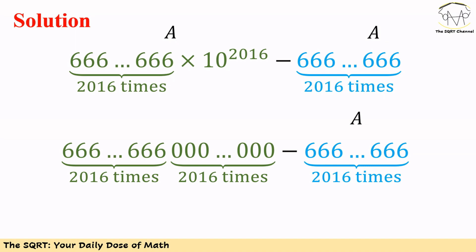Remember, 10^2016 has a 1 followed by 2016 zeros. Now we want to multiply A by this number, so we are going to end up with 2016 sixes followed by 2016 zeros. Then for the rest, we just use the number A, and we need to subtract these two numbers from each other.